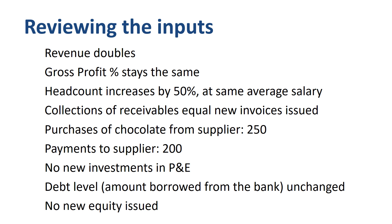What happens to the company in year 2? Revenue doubles; gross profit percentage stays the same; headcount increases by 50% at the same average salary; collections of receivables equals new invoices issued; purchases of chocolate from supplier are 250; payments to supplier are 200; no new investments in P&E; debt level — the amount borrowed from the bank — is unchanged; and no new equity is issued.